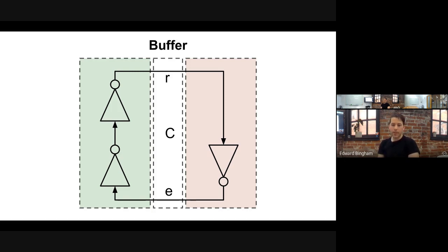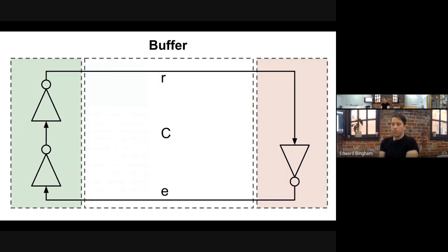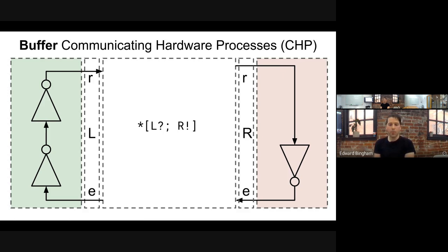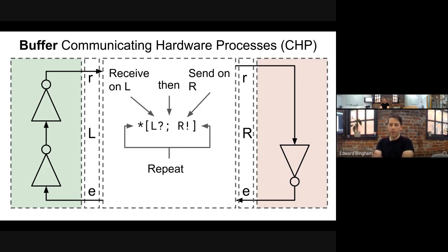Now we want to stick a buffer in between the source and the sink — a single pipeline stage that will act as some computation stage. We split channel C into a left channel L and a right channel R. The CHP — Communicating Hardware Processes — specification in the middle says: receive on L, then send on R, and repeat. We've covered production rules and handshaking extensions previously.